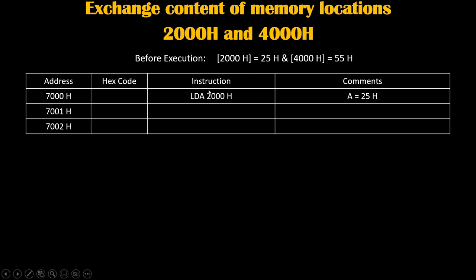On 7000h we will write the hex code for LDA. For the address 2000h, we will write it in reverse order: first we will write 00h on 7001 and after that we will write 20h on 7002.